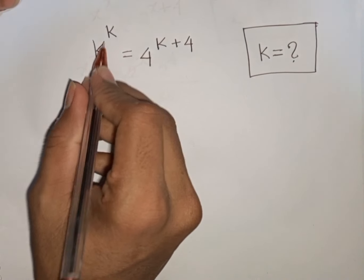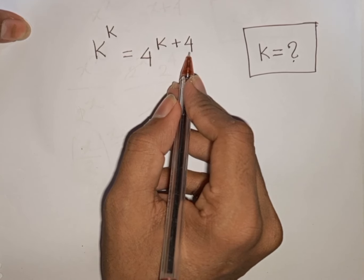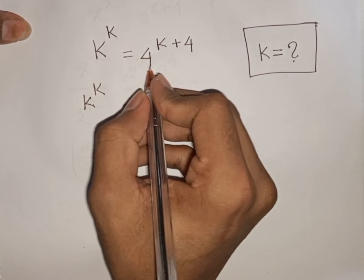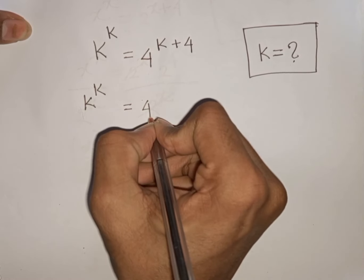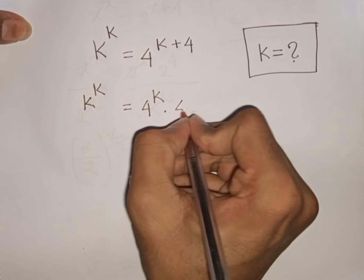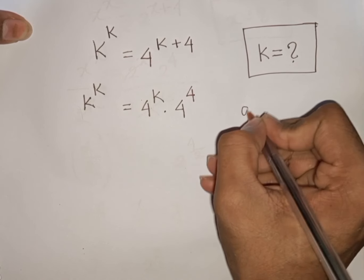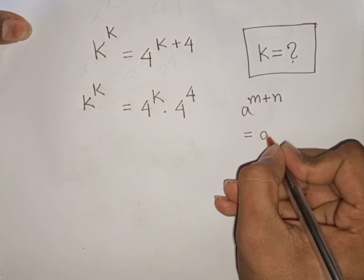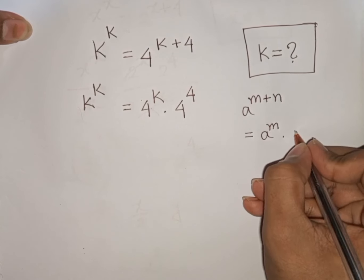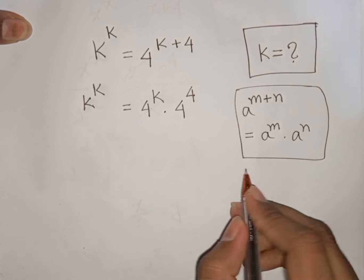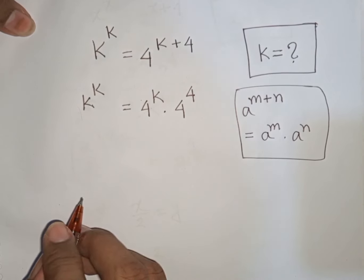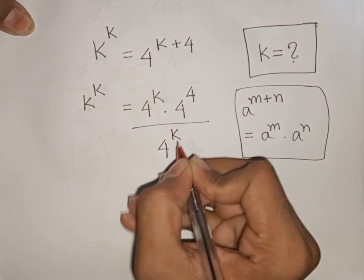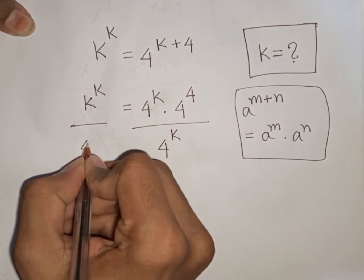How to solve k^k = 4^(k+4)? Find the value of k. We have k^k = 4^(k+4), which can be written as 4^k × 4^4, using the exponential rule a^(m+n) = a^m × a^n. Then divide both sides by 4^k, so 4^k cancels.